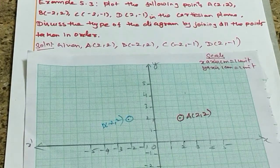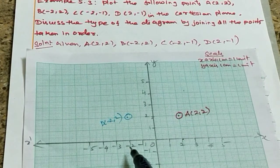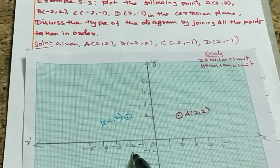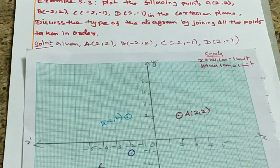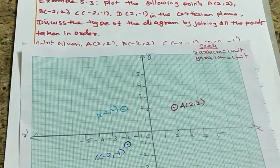Next, C point. What is the C value? Minus 2, minus 1. That's in the third quadrant. C value is minus 2, minus 1.